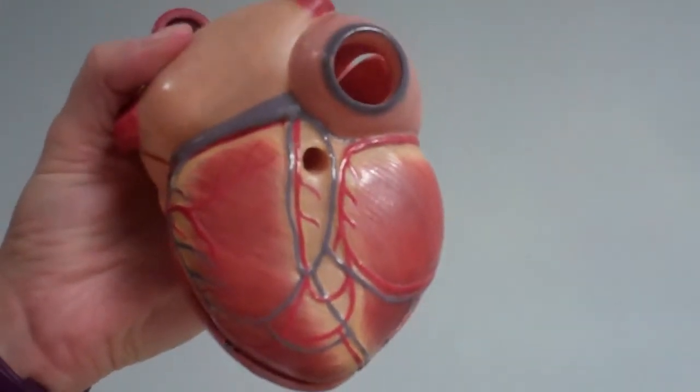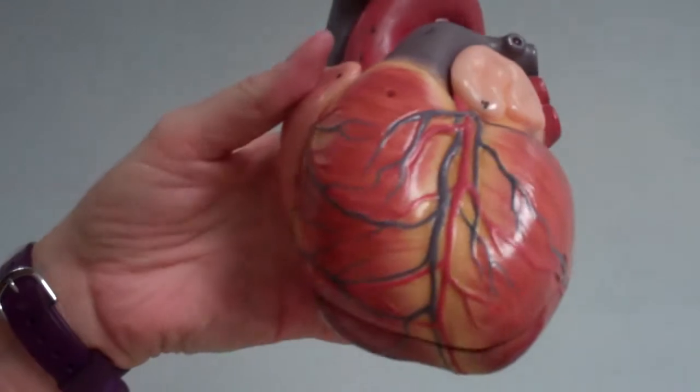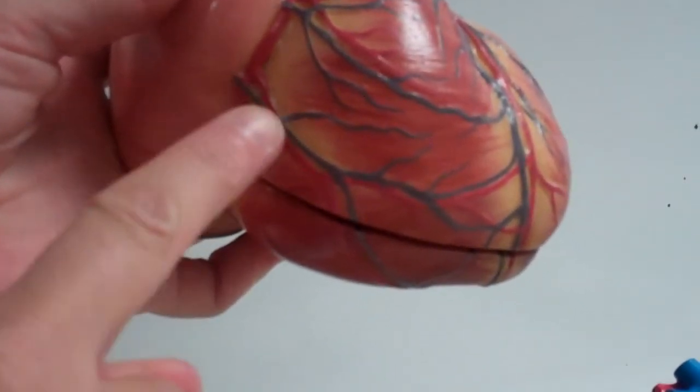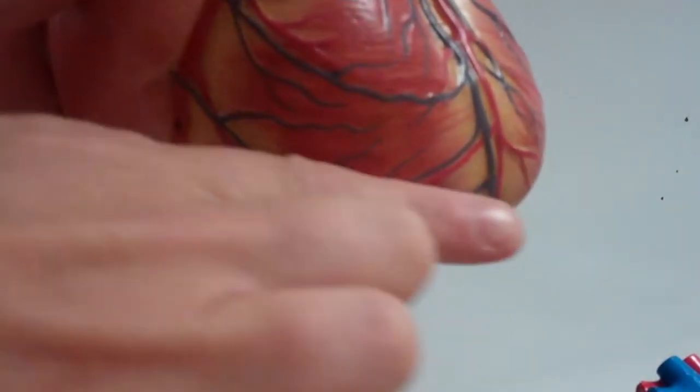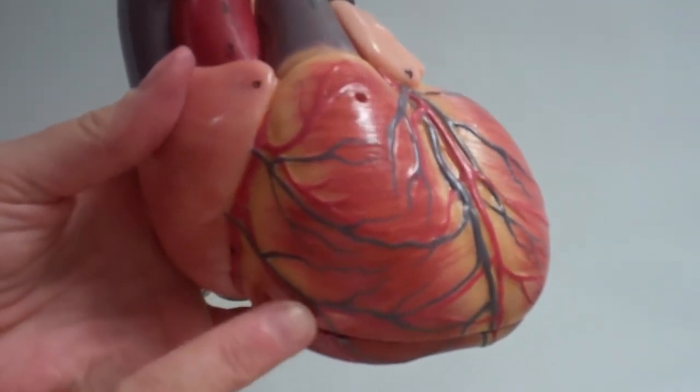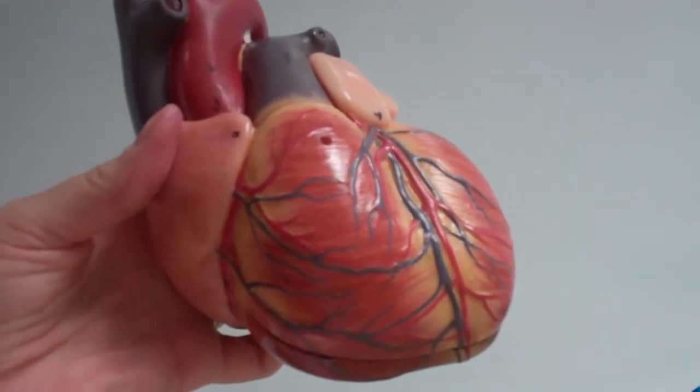Those are our vessels. The only other one I think we have listed in our lab manual is coming off the right coronary here, kind of along the margin where you transition from anterior to posterior - that's our marginal artery, right down in here. So, those are the vessels.